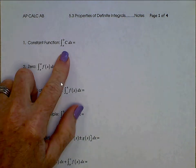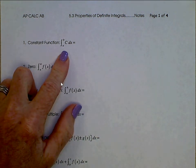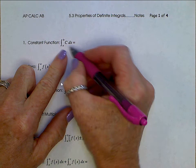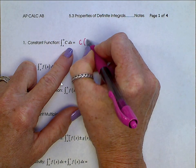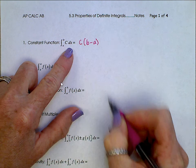The first one is a constant function, and we've talked about this before. This is just that constant C times the length of the interval B minus A.